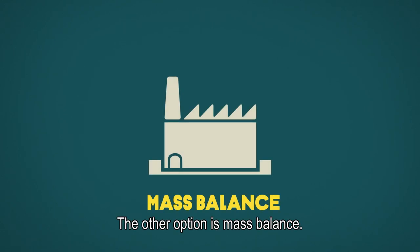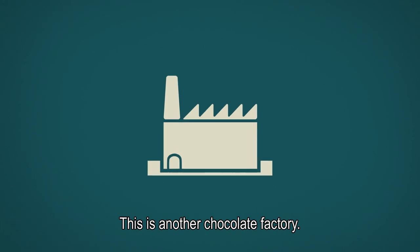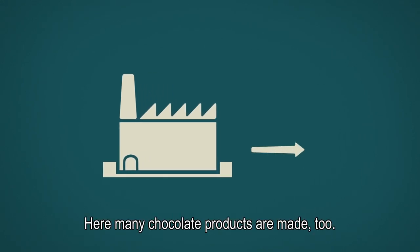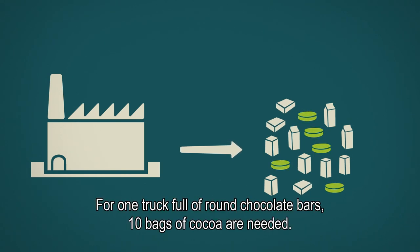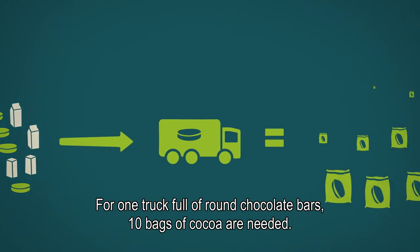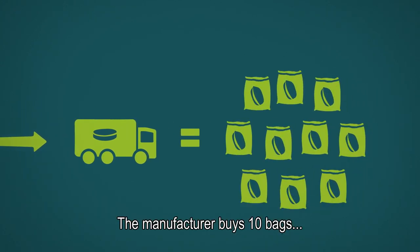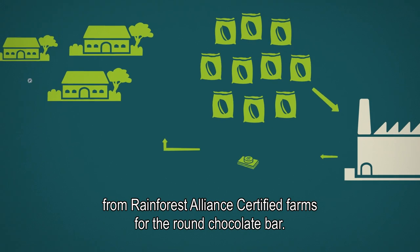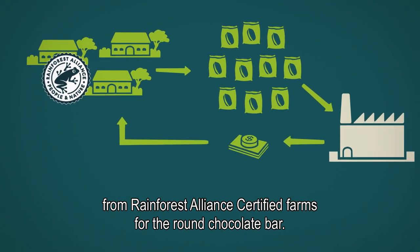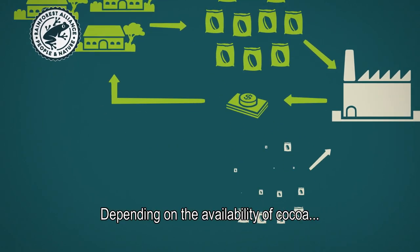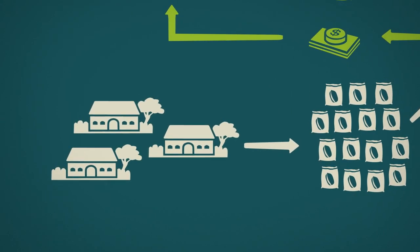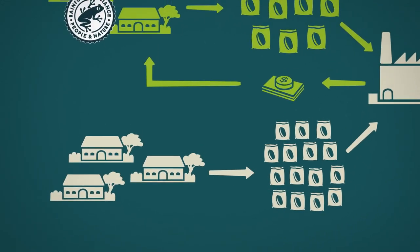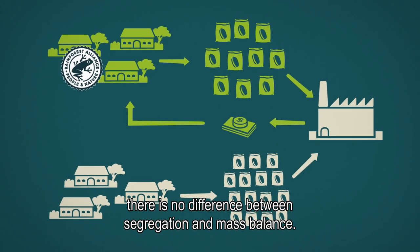The other option is mass balance. This is another chocolate factory where many chocolate products are made too. One of them is this round chocolate bar. For one truck full of round chocolate bars, 10 bags of cocoa are needed. The manufacturer buys 10 bags from Rainforest Alliance certified farms for the round chocolate bar. Depending on the availability of cocoa, he also buys non-certified cocoa for other products. Up until here, there is no difference between segregation and mass balance.